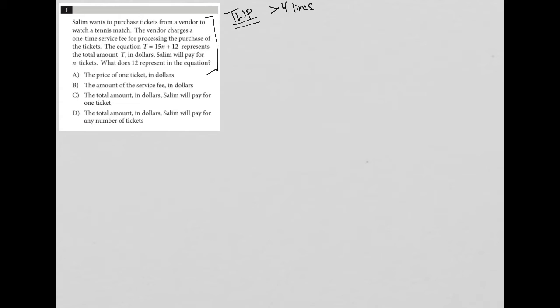So the question says, Salim wants to purchase tickets from a vendor to watch a tennis match. The vendor charges a one-time service fee for processing the purchase of the tickets. The equation T equals 15N plus 12 represents the total amount T in dollars Salim will pay for N tickets.